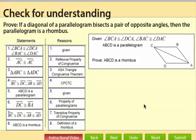So that's the completed proof that shows if a diagonal of a parallelogram bisects a pair of opposite angles, then the parallelogram is a rhombus.